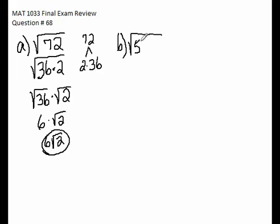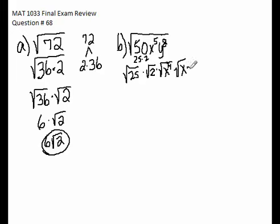We've got the square root of 50 times x to the fifth y to the eighth. Again, we look for perfect square factors. 50 is 25 times 2, so the square root of 25 times the square root of 2, times the square root of x to the fourth, that's the biggest perfect square factor, and x to the fifth times the square root of x, times the square root of y to the eighth.